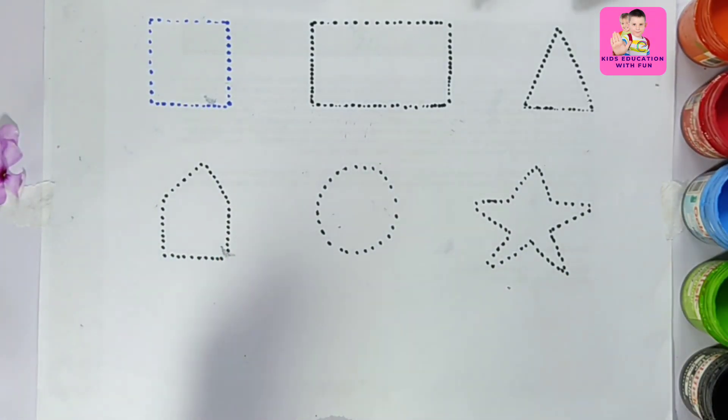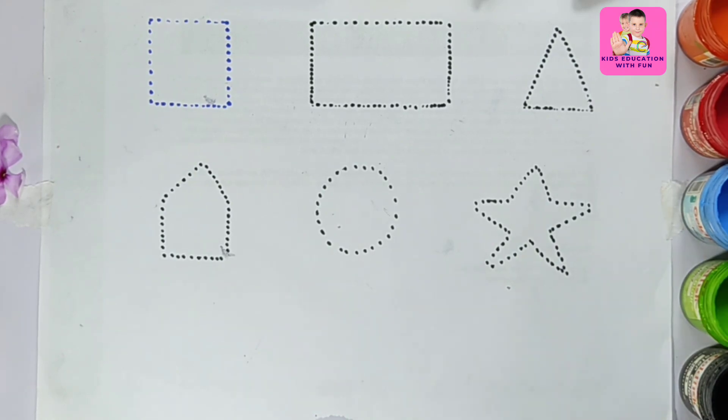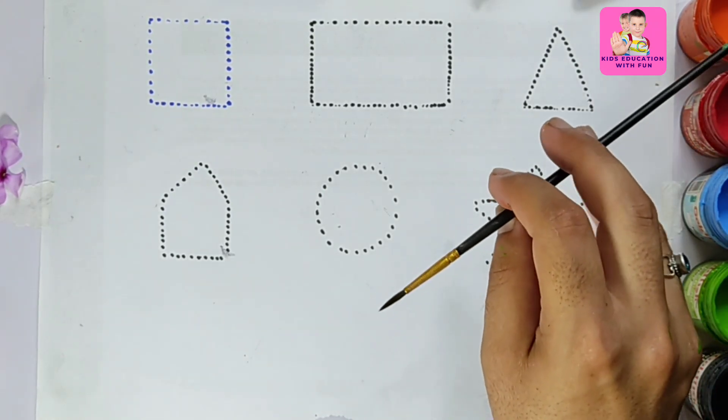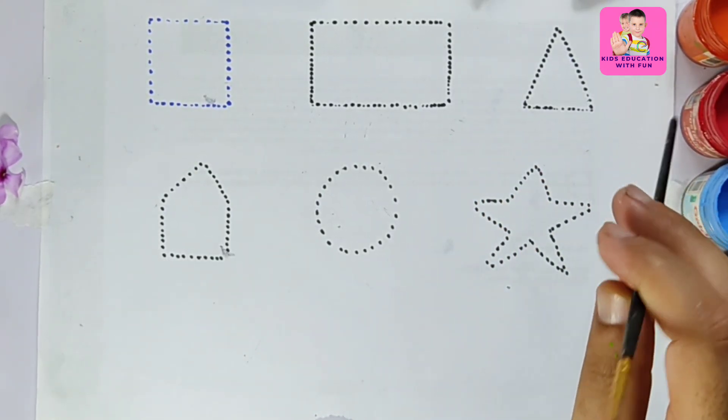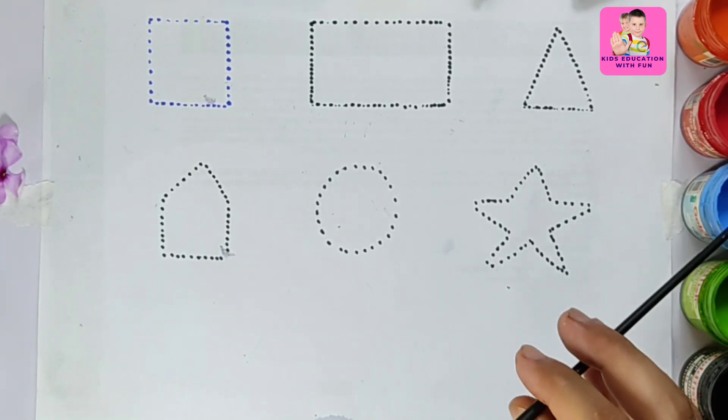Hello kids, welcome to Kids Education with Fun. In this video you will learn about different shapes. We have different colors: orange, red, blue.